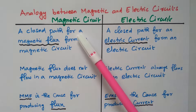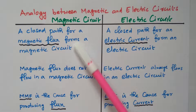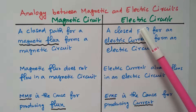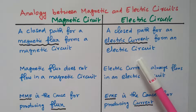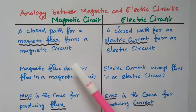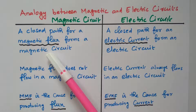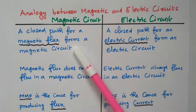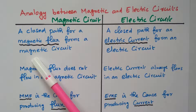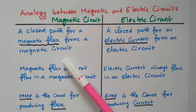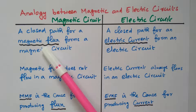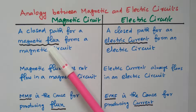We have the magnetic circuit details available here, and the electric circuit details are available here. The closed path for the magnetic flux forms a magnetic circuit — the magnetic flux forms the closed path.